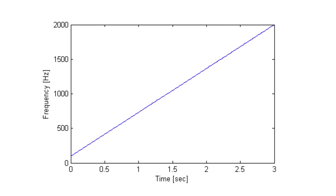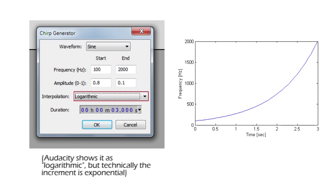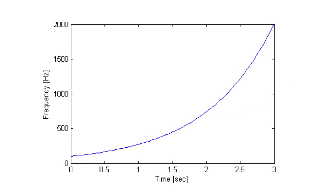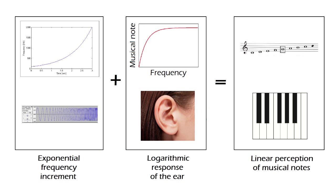You may have noticed that the low tones seem to pass by really quickly and we mostly heard higher tones. Now, if we make the sweep with the frequencies increasing exponentially as shown in the graph, it will sound like this. Notice that it sounds more natural? This is because the exponential increase compensates for the logarithmic response of our ear.